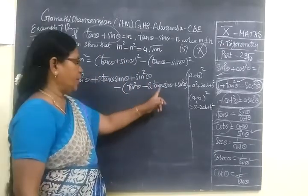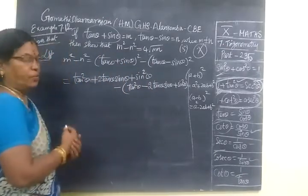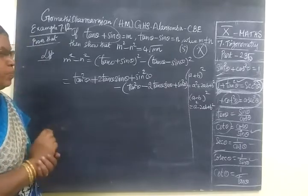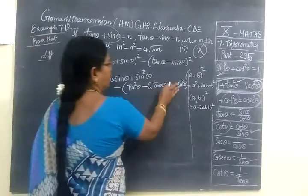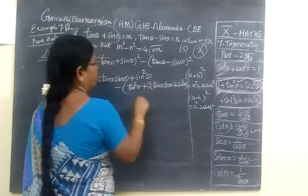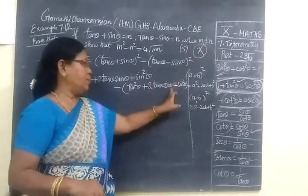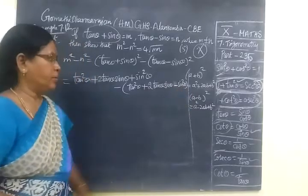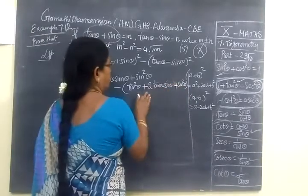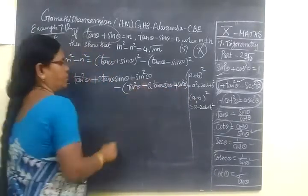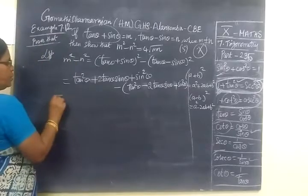Again, you will get tan square theta minus 2 tan theta sin theta plus sin square theta.